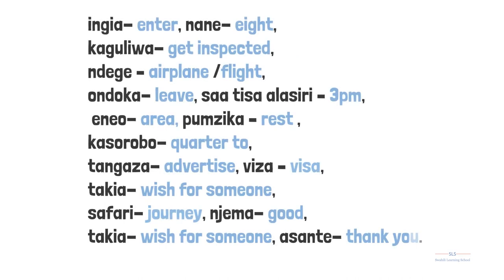We also have: 'ingia', enter. 'Nane', eight. 'Kukaguliwa', get inspected. 'Ndege', airplane or flight. 'Ondoka', leave. 'Saa tisa na nusu', 3pm. 'Eneo', area. 'Kupumzika', rest. 'Kasorobo', quarter to. 'Tangaza', advertise. 'Visa', visa. 'Takia', wish for someone. 'Safari', journey. 'Njema', good. 'Asante', thank you.